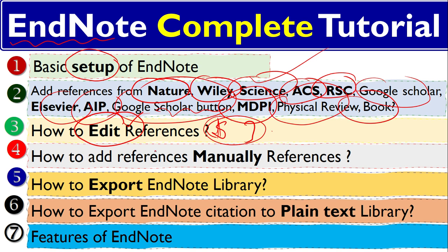The fourth step is how to add references manually. Manually means that you've read something and you want to cite it, but you don't know how to download its citation because it is not available anywhere, or it is difficult for you to find the citation. So you have to do it manually.